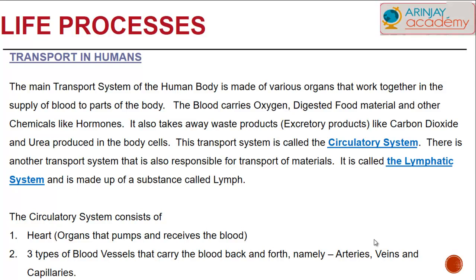Blood carries elements such as oxygen, digested food material, and other chemicals like hormones. It also removes waste products — excretory products like carbon dioxide and urea produced in body cells. Apart from the circulatory system, there is another transport system called the lymphatic system, made up of a substance called lymph.